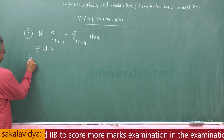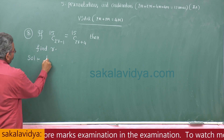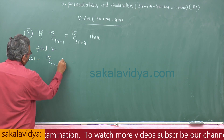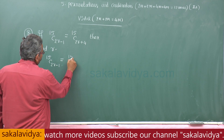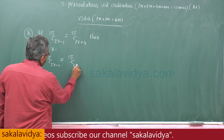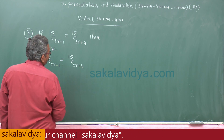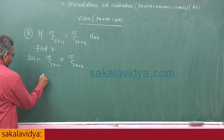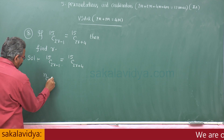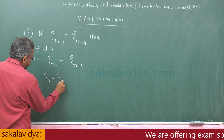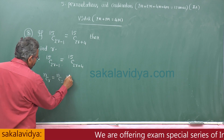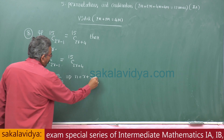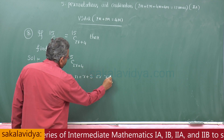Given: 15C(2r-1) equals 15C(2r+4). Let me revise the formula — what is the formula we have? NCr is equal to NCs implies N is equal to r plus s, or r is equal to s.